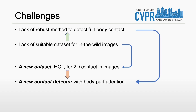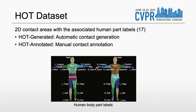With HOT, we develop a new contact detector that incorporates a body-part attention module. The HOT dataset is introduced with 2D contact areas and the associated human-part labels as annotations. To create a well-varied dataset, we collect images from two different sources: HOT-generated and HOT-annotated.